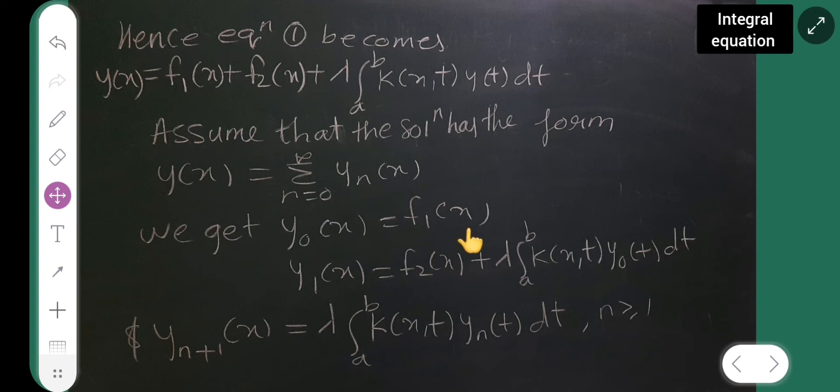So, for Y naught, it is like this. For Y1, it will be like this. And it will be so up to many number of terms. So, if it is Y N plus 1, suppose N is your 1, 1 plus 1 will become 2, right? For this last parts now, like for Y2, Y3, there won't be F1, neither there will be F2. Directly, Lambda integral from A to B, K of X, T, Y naught of T.